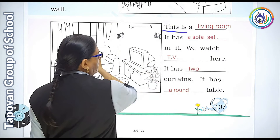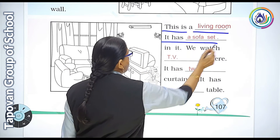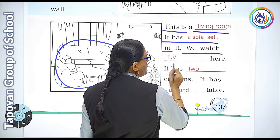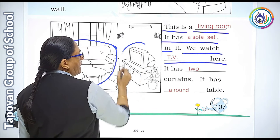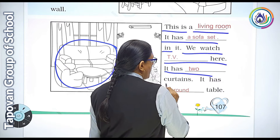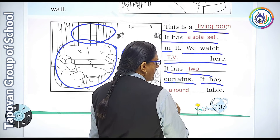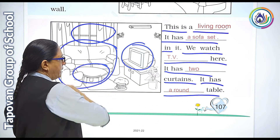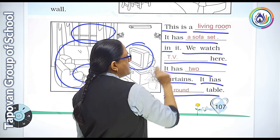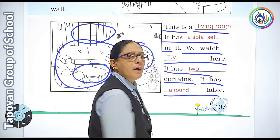This is the living room — yeh living room hai, jahan hum baithte hain. It has a sofa set. In it we watch TV. It has two curtains — curtains means parde hote hain. It has a round table.